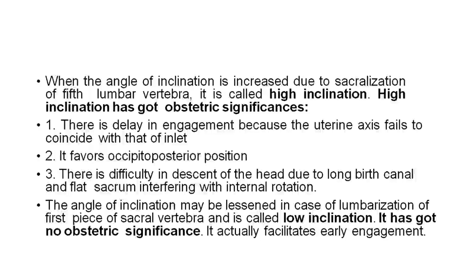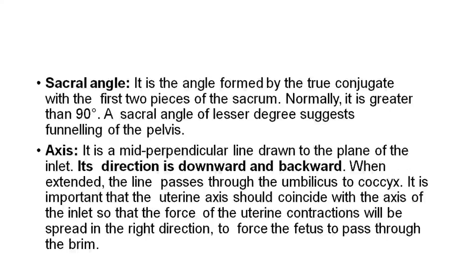The angle of inclination may be less than normal in cases of lumbarization of the first piece of the sacral vertebra — that is called low inclination. It has no obstetric significance and actually facilitates early engagement. Sacral angle is the angle formed by the two conjugates with the first two pieces of the sacrum; normally it is greater than 90 degrees. A greater angle decreases the funneling of the pelvis.